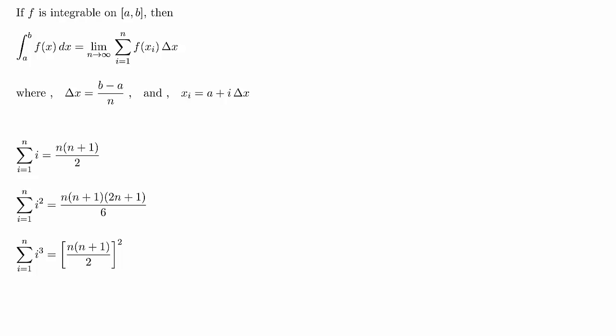Where delta x is b minus a over n, and the b and the a are your limits on your integral. And x_i is equal to a plus i times delta x, where a is the lower limit of your integral. We also need to know what the sum of i, i squared, and i cubed is as i goes from 1 to n, and this is what each of them are.